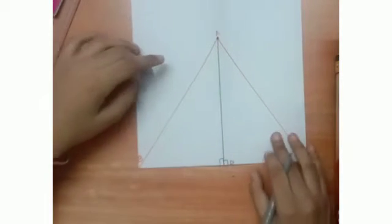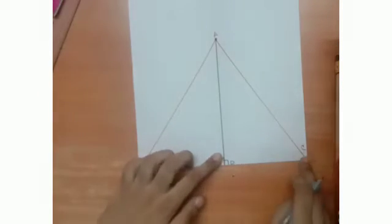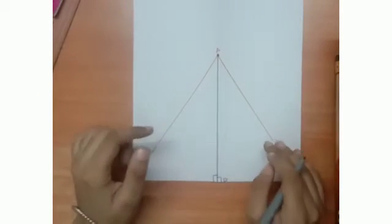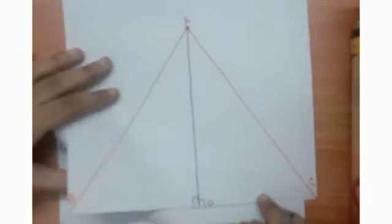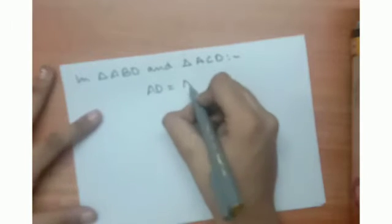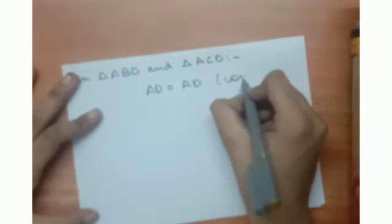So now can you prove triangle ABD congruent to triangle ACD? Yes, of course we can. So in triangle ABD and triangle ACD, we see that AD is equal to AD because it is common. So let us write it out: AD equals AD, common.